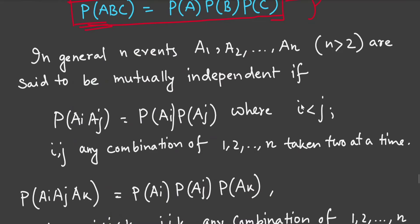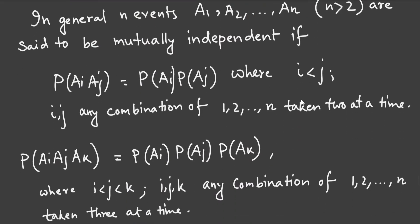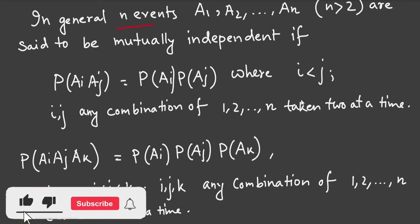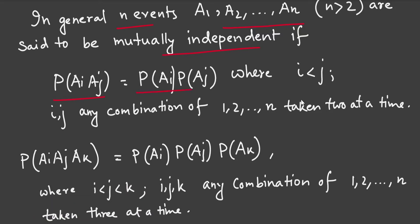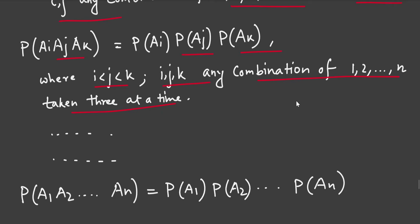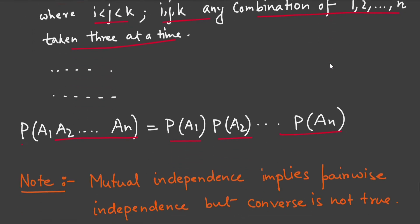In general, n events A₁, A₂, …, Aₙ are said to be mutually independent if P(AᵢAⱼ) = P(Aᵢ)·P(Aⱼ) for all i < j, P(AᵢAⱼAₖ) = P(Aᵢ)·P(Aⱼ)·P(Aₖ) for all i < j < k, and so on, up to P(A₁A₂…Aₙ) = P(A₁)·P(A₂)·…·P(Aₙ). Mutually independent implies pairwise independence but the converse is not true.